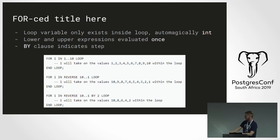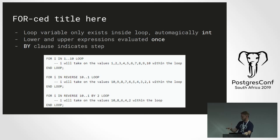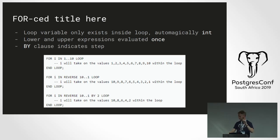We also have the basic FOR loop — a for variable in numbers loop. That loop variable will automatically be created as type integer and only exists within the loop. The lower and upper expressions are only evaluated once, so if you get them from a query or execute statement, you can't change your upper bound in the loop. The BY clause indicates the step size. The REVERSE keyword is necessary if you want to go backwards from 10 to 1. Without REVERSE, the lower bound is assigned to the variable and it loops while the variable is smaller than the upper bound. With REVERSE, the bounds are switched around.